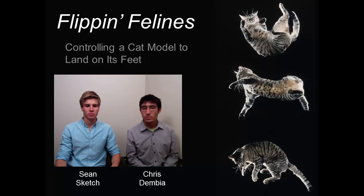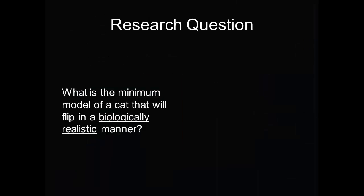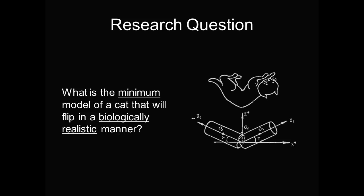More specifically, we wish to answer the following question: What is the minimum model of a cat that will flip in a biologically realistic manner? Does the cat need legs to perform its acrobatics? What about a tail? Can it flip without being able to twist its spine? In other words, will a model as simple as this be able to flip over, or will we need this Franken-cat?